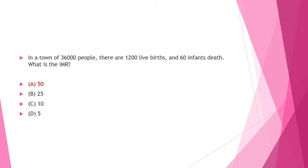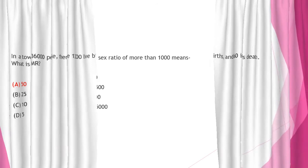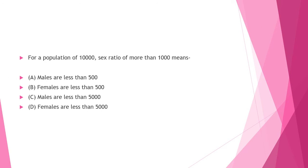Next question: For a population of 10,000, sex ratio more than 1,000 means — Option A: males are less than 500, Option B: females are less than 500, Option C: males are less than 5,000, Option D: females are less than 5,000. Answer to this question is Option C: males are less than 5,000.